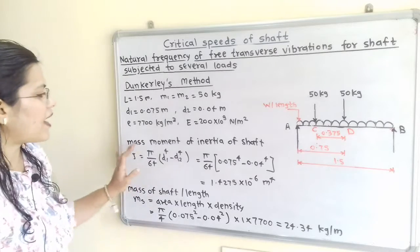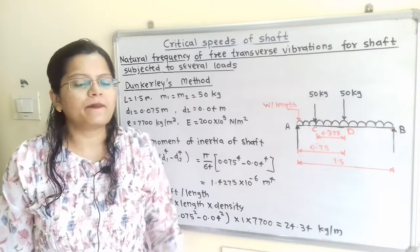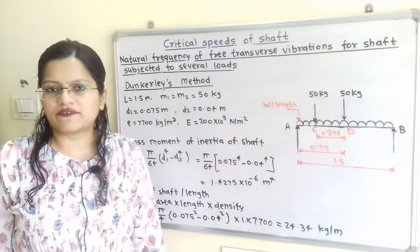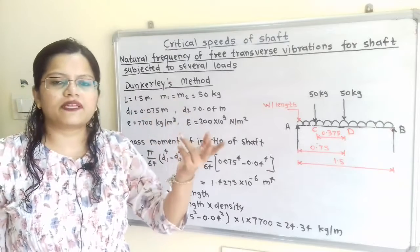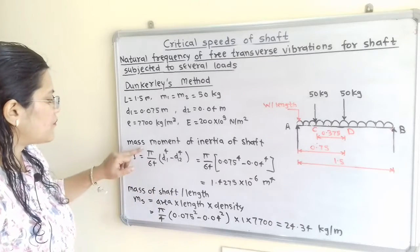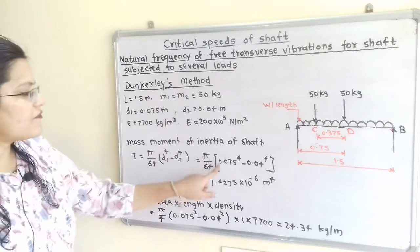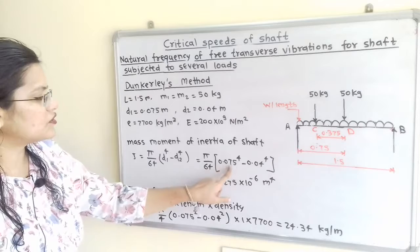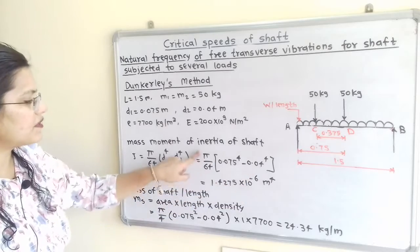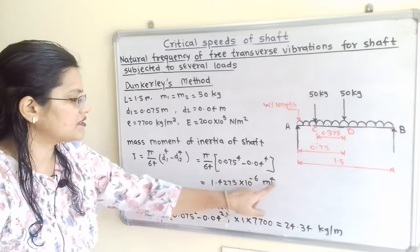We will first calculate the second moment of area (moment of inertia) of the shaft, I. For a hollow shaft: I = π/64 × (D1⁴ − D2⁴) = π/64 × (0.075⁴ − 0.04⁴). The answer is I = 1.4275 × 10⁻⁶ m⁴.